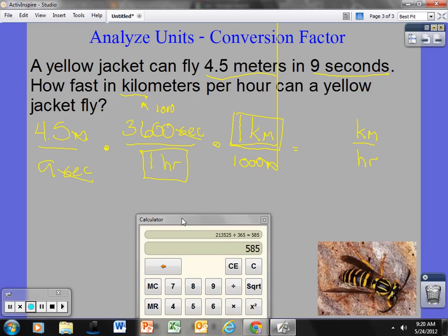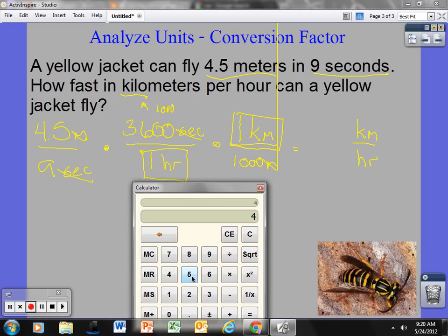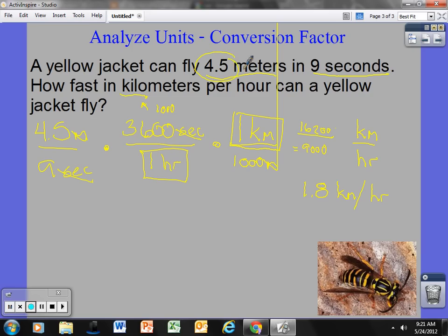Let's just multiply straight across. Four and a half times 3,600 equals 16,200, divided by nine times one times a thousand. Nine times one is nine times a thousand is nine thousand, and now I have my division problem. I take 16,200 divided by nine thousand, I get one and eight tenths, or 1.8 kilometers per hour that a yellow jacket can fly if it travels at four and a half meters per nine seconds.